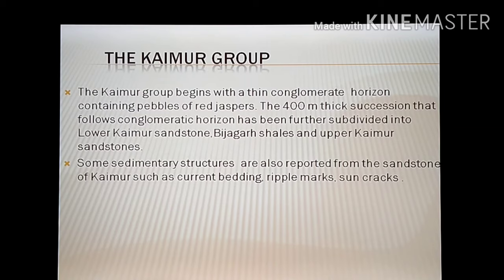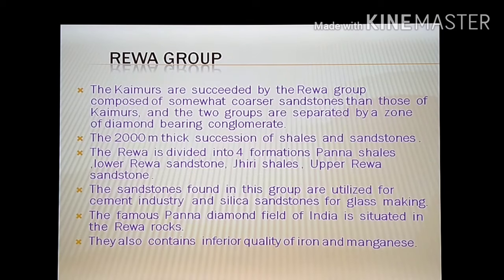The 400-meter-thick succession following the Kaimur conglomerate horizon has been further divided into lower Kaimur sandstone, Bijaigarh shales, and upper Kaimur sandstone. Some sedimentary structures are also reported from the sandstones of Kaimur, such as current beddings, ripple marks, and sun cracks, also known as desiccation cracks.